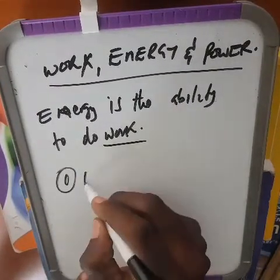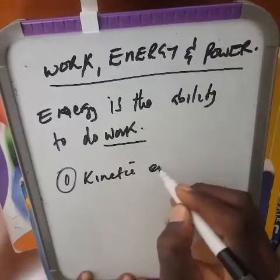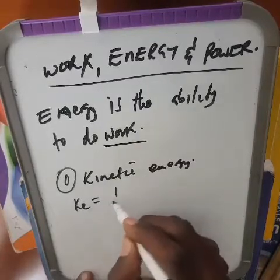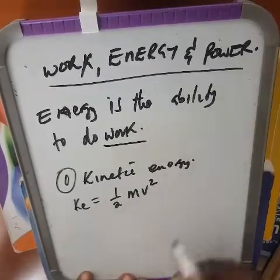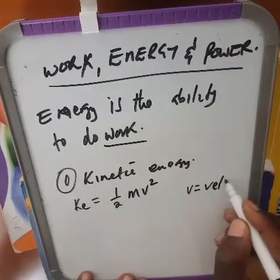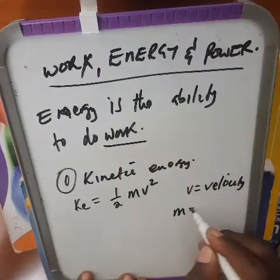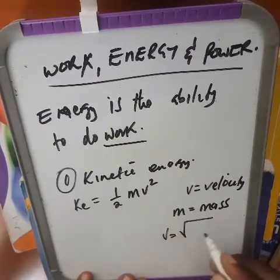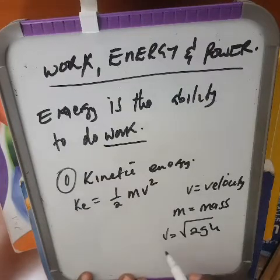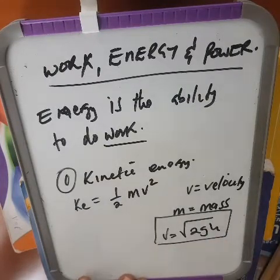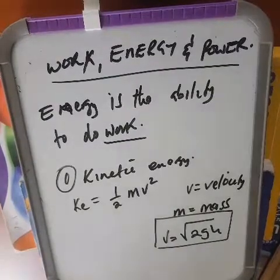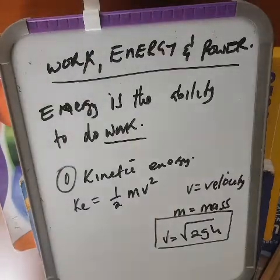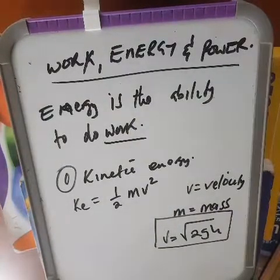We are going to concentrate on two types of energy. The first is kinetic energy, which is given by the formula ½mv², where v is velocity and m is mass. Velocity can also be found using v = √(2gh). This formula is useful when you are not given velocity directly, so you can calculate your kinetic energy.